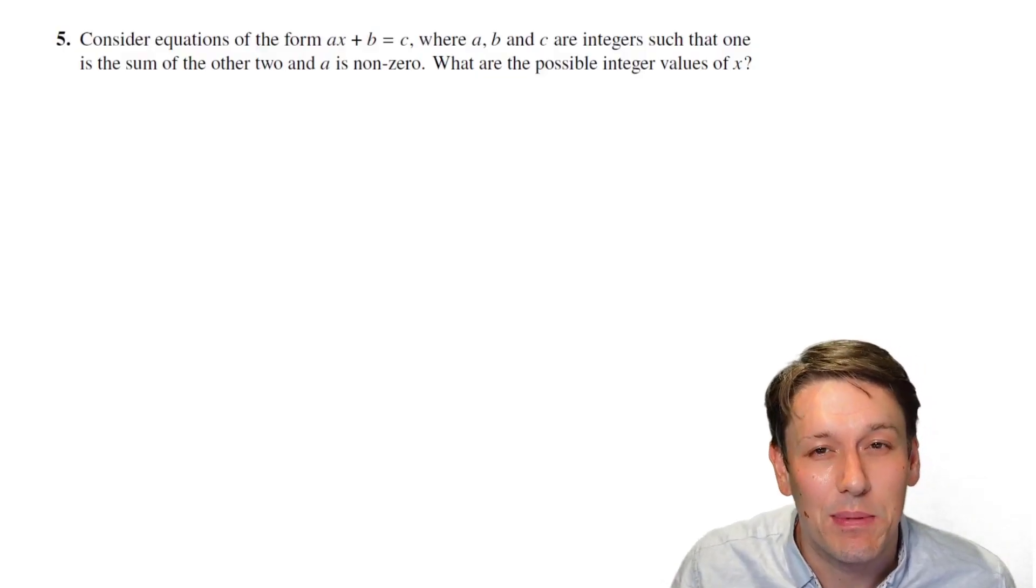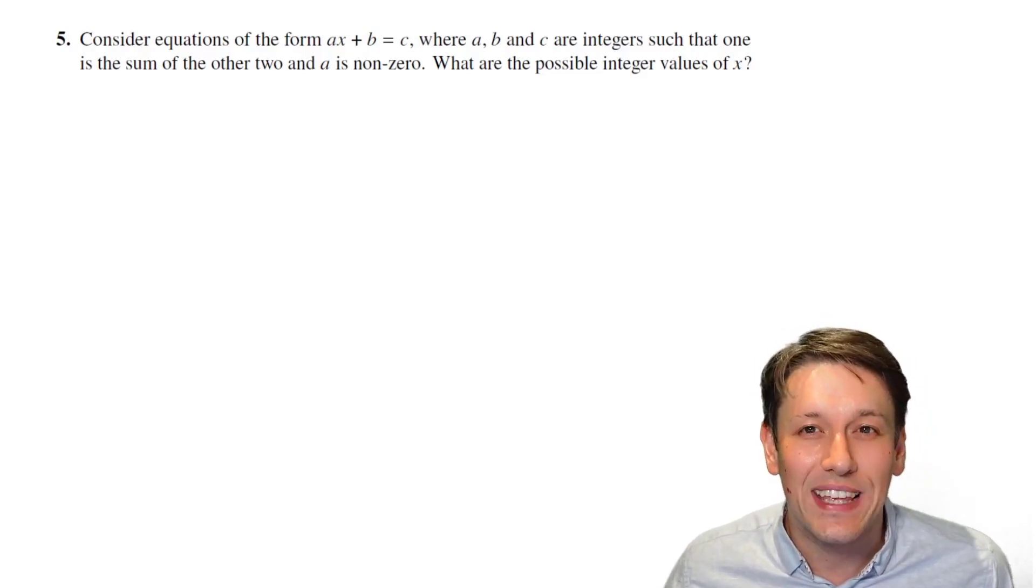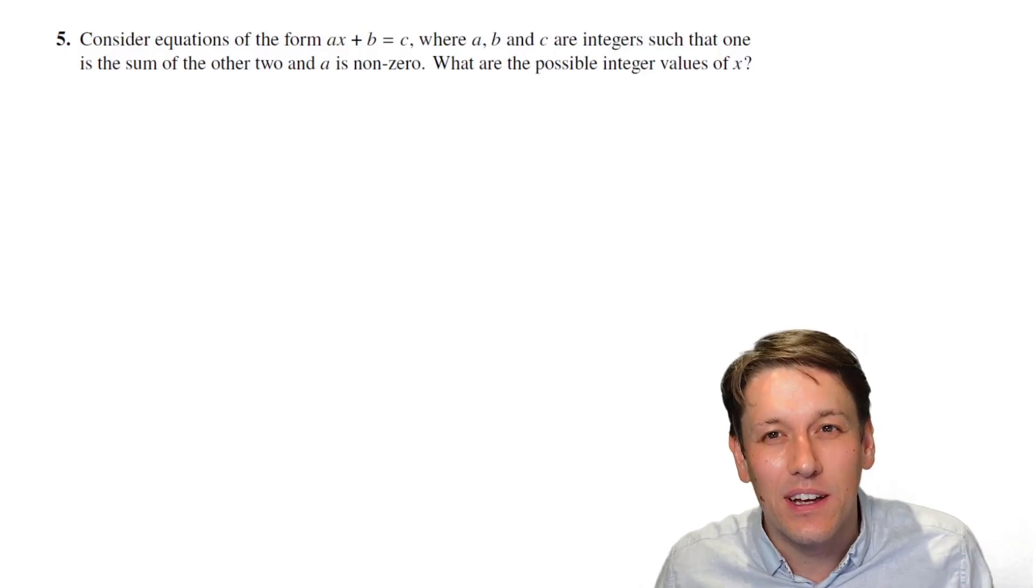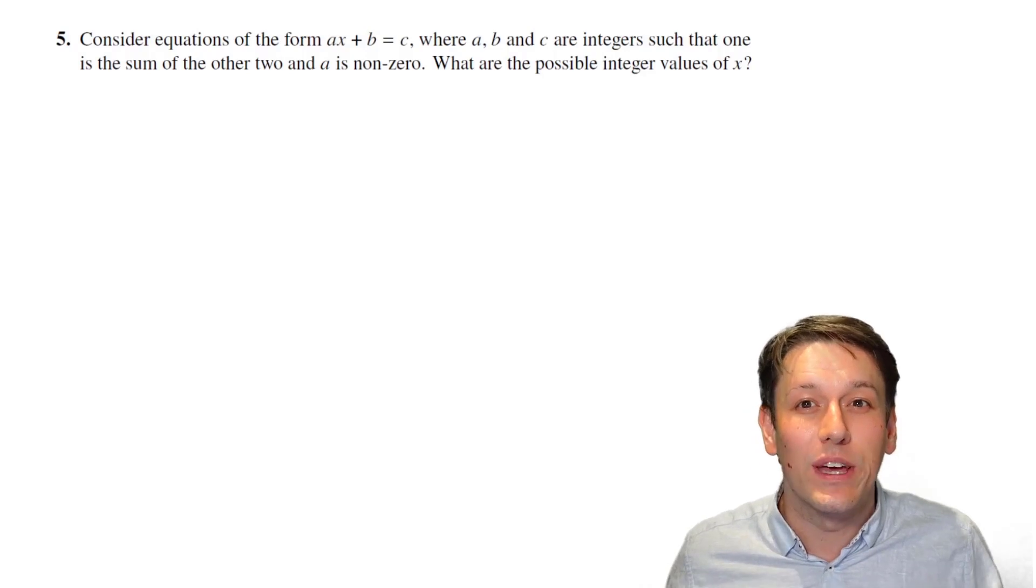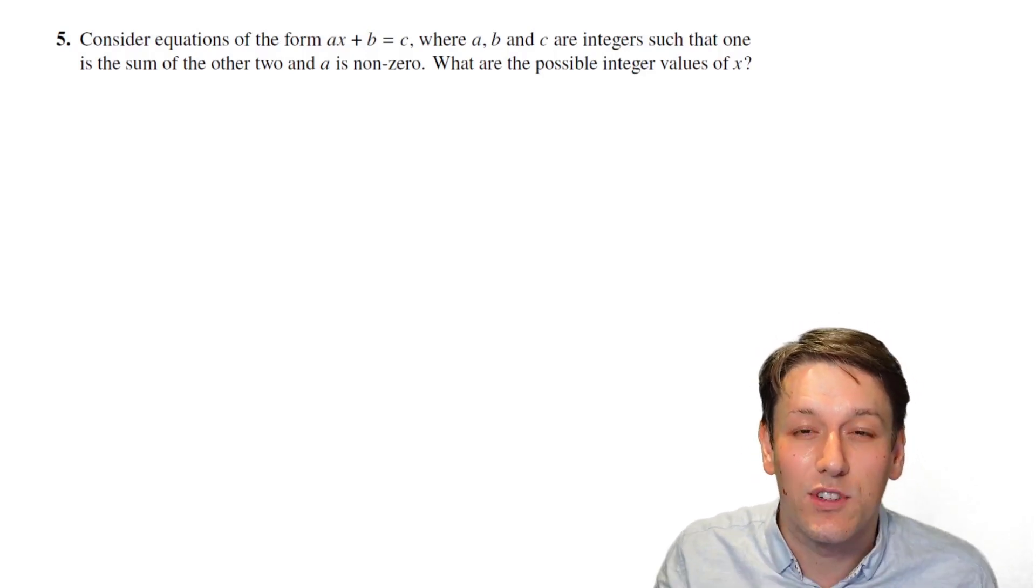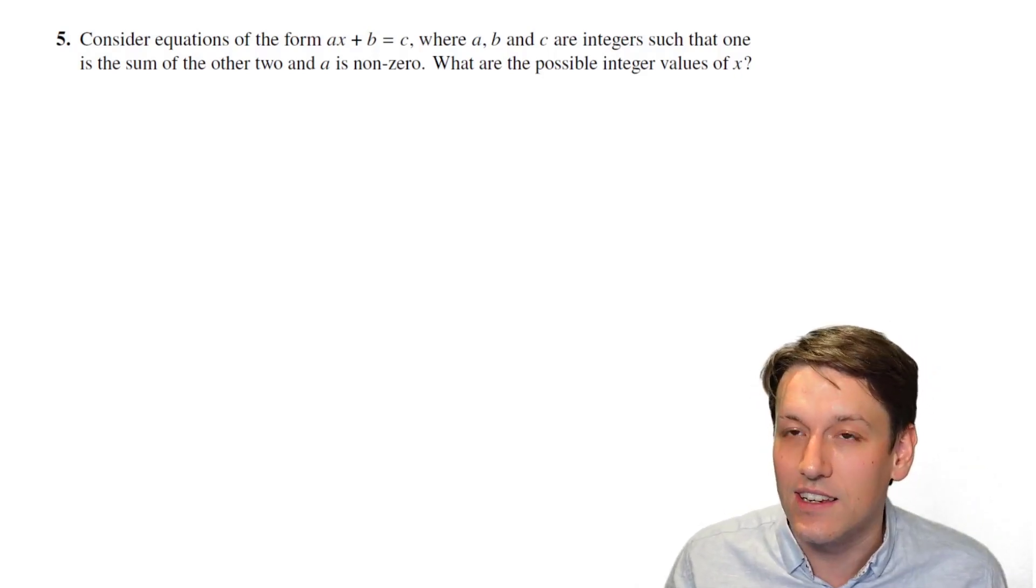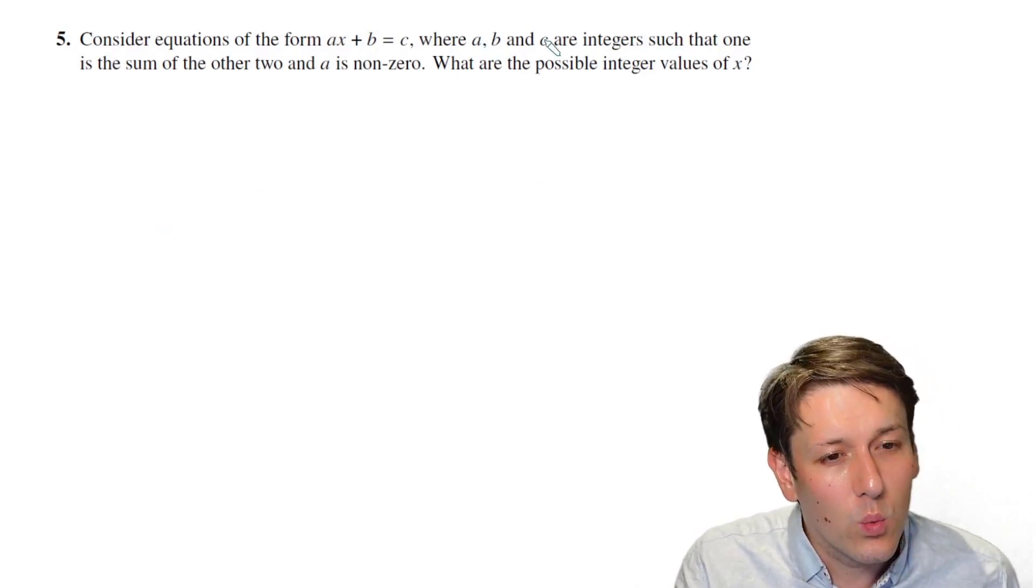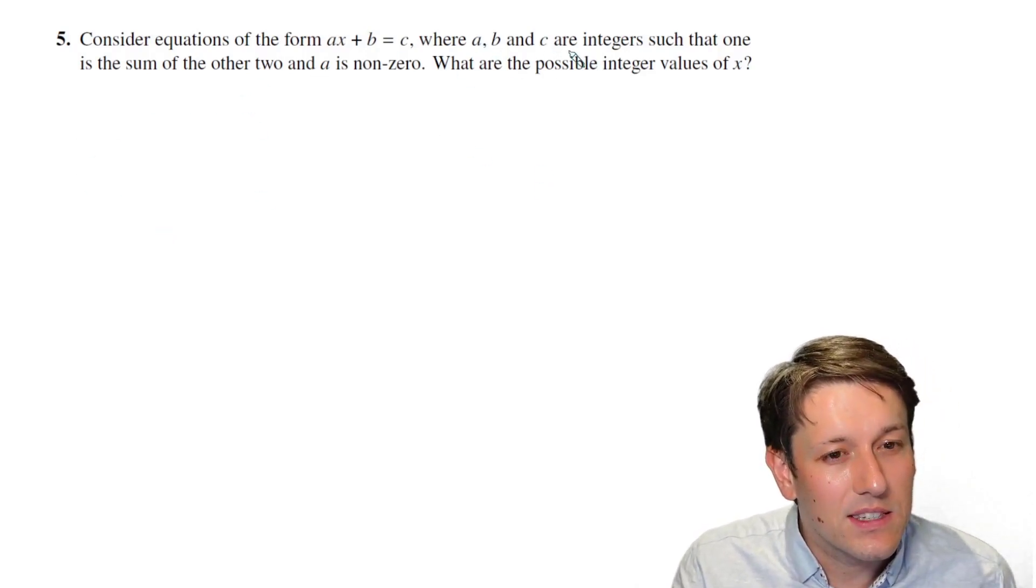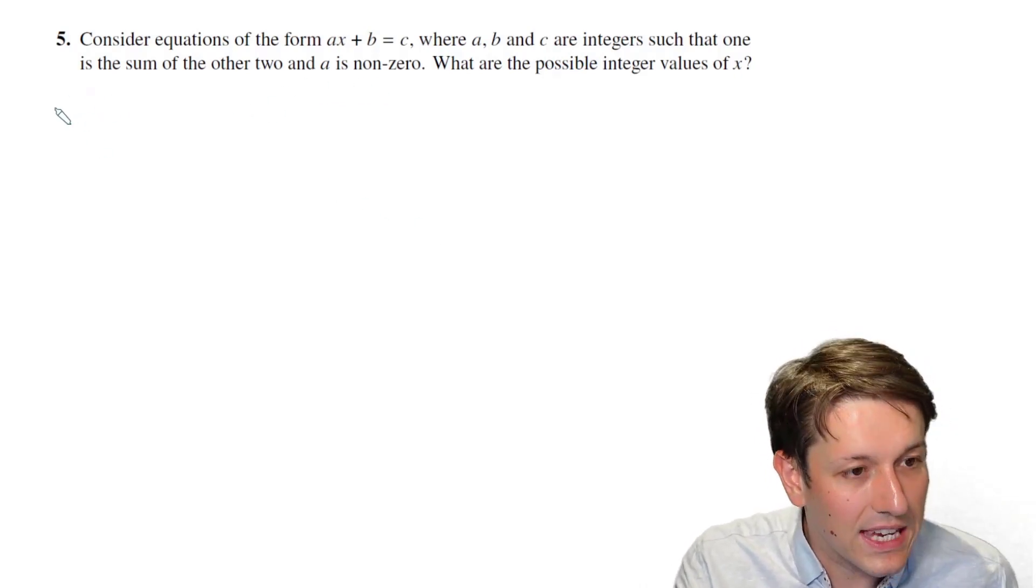I was slightly in two minds about how to go about doing the solution to this question, because there's loads of ways you can do it, and also some sort of dead ends. But they probably are ways you would think about this problem, and very natural things to think about. We want these a, b, and c to have one of the numbers being the sum of the other two, so there are kind of three cases to consider.